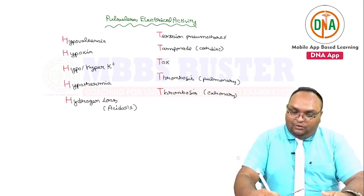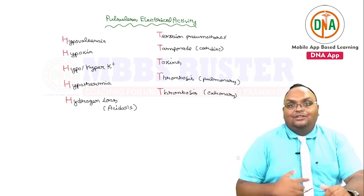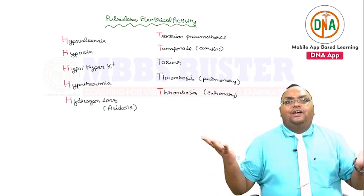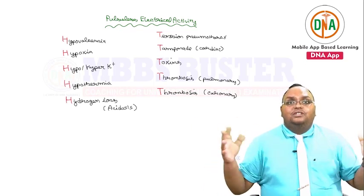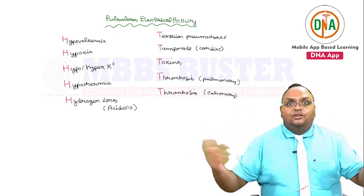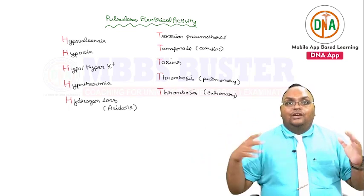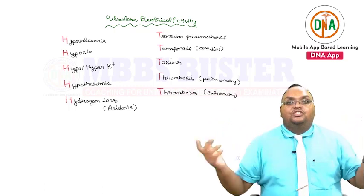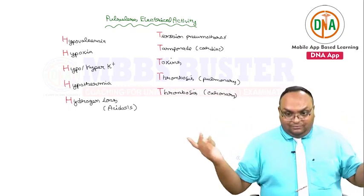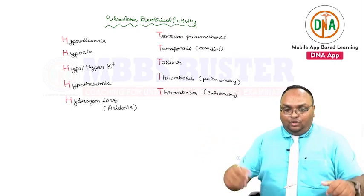To summarize the 5 T's: thrombosis — blockages in your path, could be coronary or pulmonary; toxins — toxic substances in your body; and external pressures — pressure on the lung, which is tension pneumothorax, and pressure on the heart, which is cardiac tamponade.